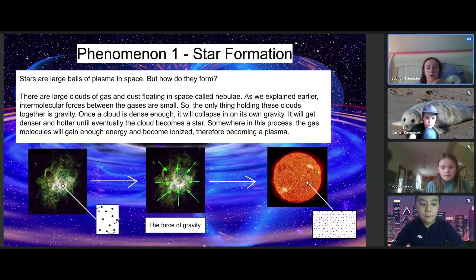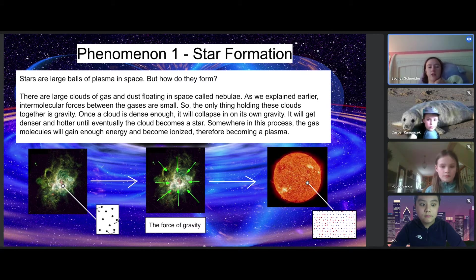Once a cloud is dense enough, it will collapse under its own gravity. It will get denser and hotter until eventually the cloud becomes a star. Somewhere in this process, the gas molecules gain enough energy and become ionized, therefore becoming a plasma.